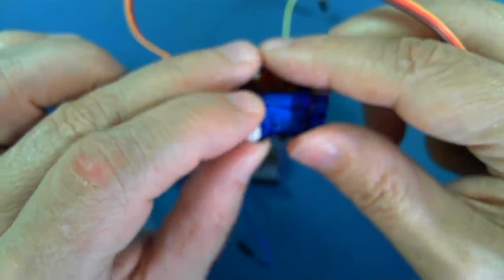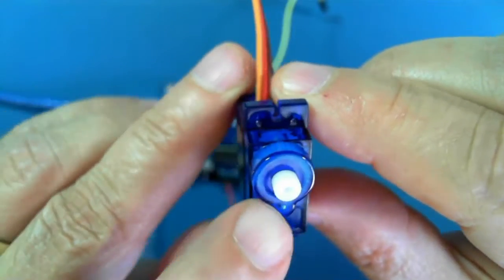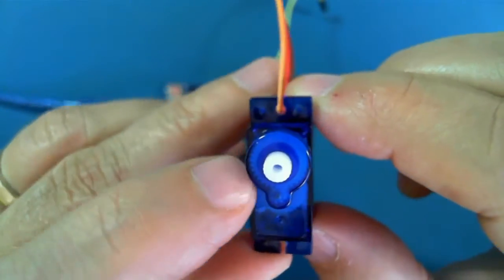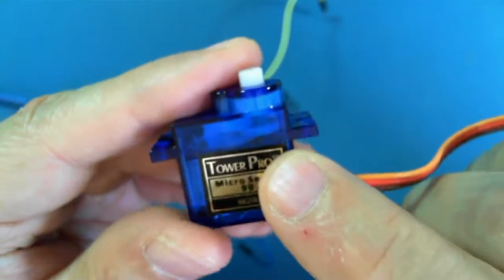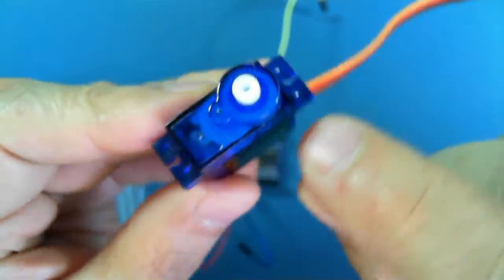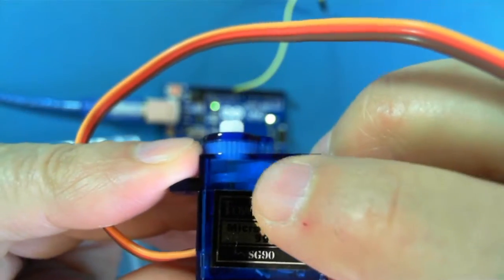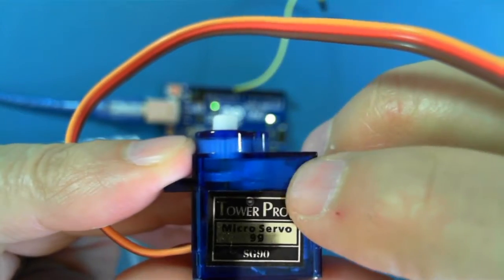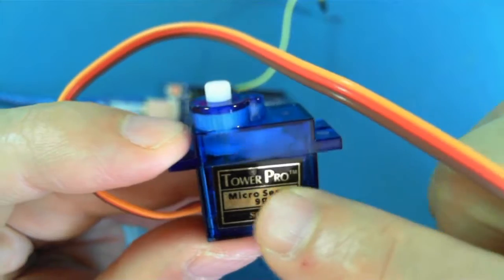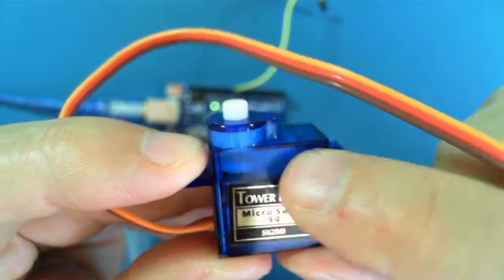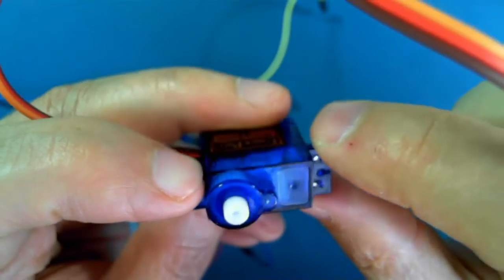The quality of servos is determined often by the types of gearing that they have. The motor that's inside here runs at a very high speed and then that speed is reduced using a set of gears so that maybe 20 or 30 turns of the motor will result in maybe a 5 degree turn of the shaft.